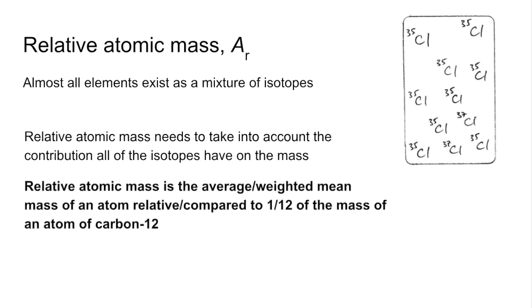So the relative atomic mass is the average or weighted mean mass of an atom, and then that ending is the same, compared to one twelfth of the mass of an atom of carbon-12. So the mass number you see on the periodic table is the relative atomic mass that takes into account the different isotopes, whereas the relative isotopic mass is only considering one isotope.